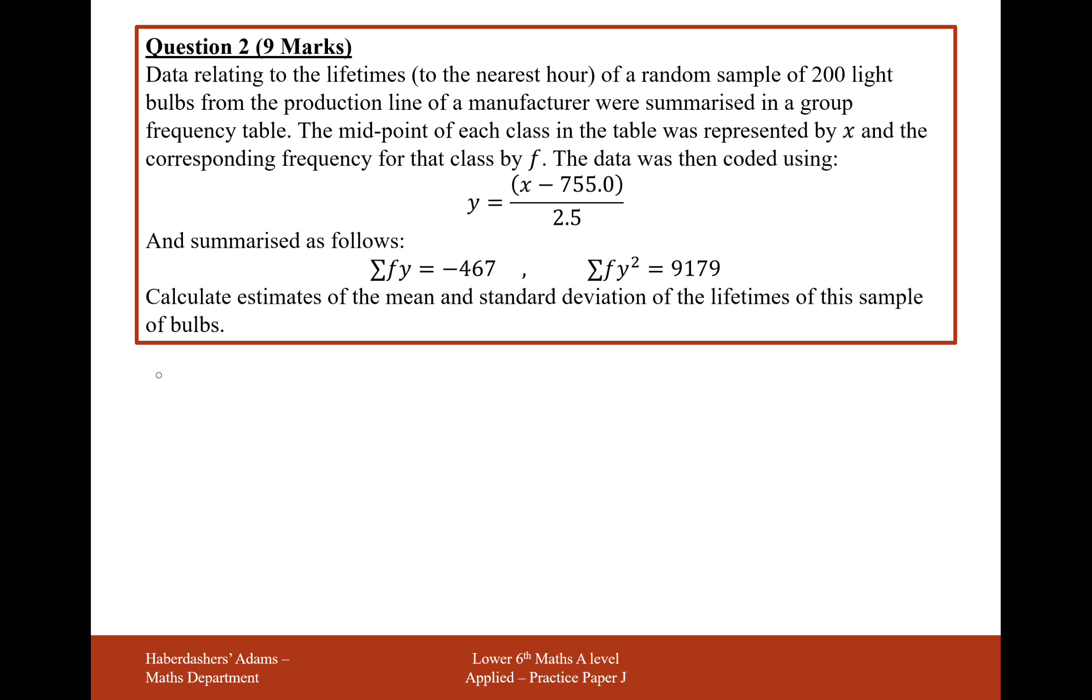First, we're going to work out Y bar and then work out X bar from there. So Y bar, the mean of the Y values, equals the sum of F times Y divided by the sum of the frequencies. This is a standard formula that you need to know. We've taken 200 light bulbs, so that's our sum of frequencies value or the N value, so we divide by 200.